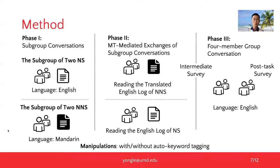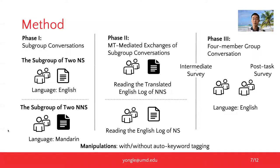First, participants were given task materials and had text-based conversations within subgroups using their native languages. Later on, they reviewed the phase 1 conversation log of the other subgroup. The conversation logs for English speakers are machine translated messages that were originally in Mandarin. For our manipulation, all participants in the experiment condition received the auto-tagged keywords from conversation messages.